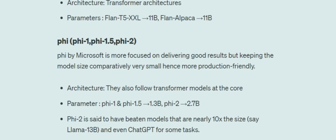The best part about the Phi models is that they are parameter-friendly — meaning the size is comparatively very small compared to their competitors, yet they deliver good results. The architecture is again transformer-based. Phi-1 and Phi-1.5 have 1.3 billion parameters only, and Phi-2, released just a couple of days back, has 2.7 billion parameters.